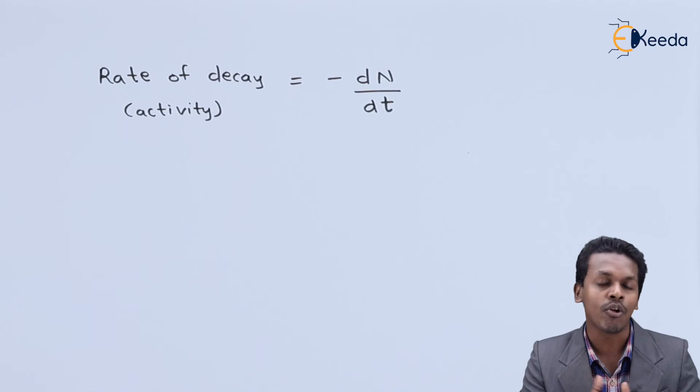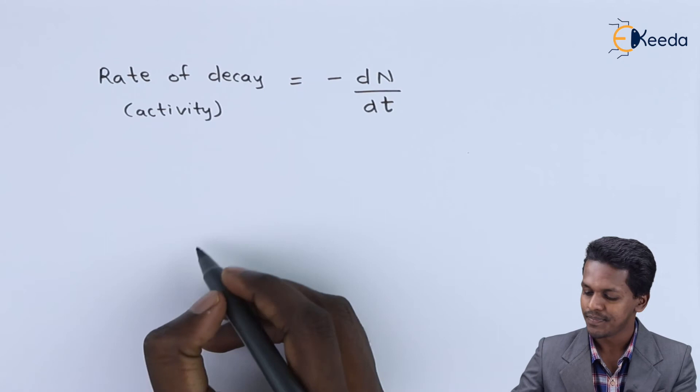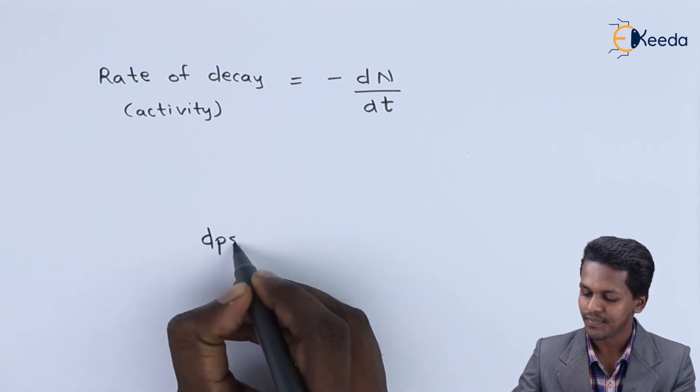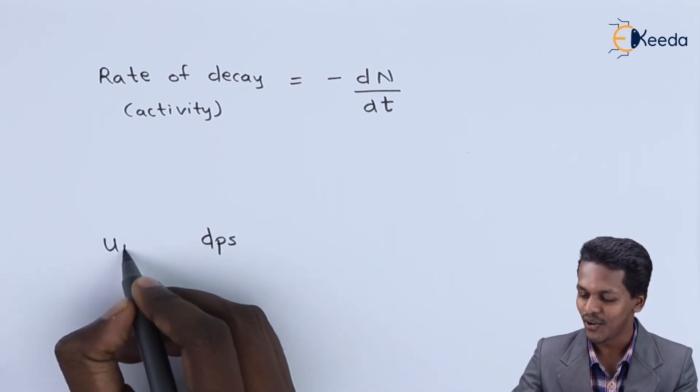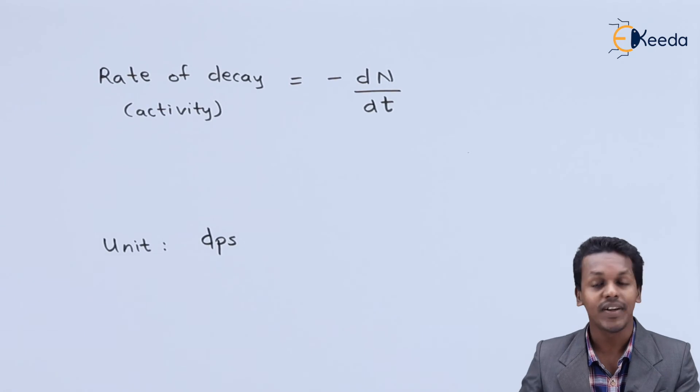What is the unit of the rate of decay? The unit of the rate of decay is represented by DPS, that means disintegrations per second. Therefore, this is the unit of the rate of decay.